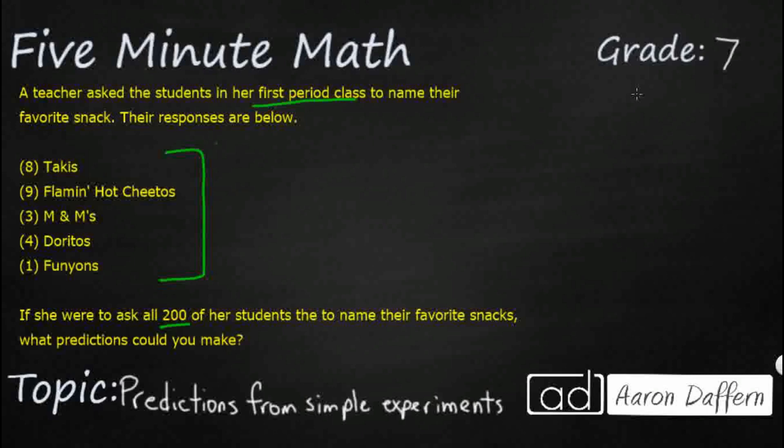So this is going to be our small sample. We're going to use this sample to make a prediction about a much larger sample that we are not going to ask all 200 for. So first we need to figure out how many students are in this sample. So let's just add up our responses here. So that's going to be 10, 17, and 8 is 25. So we've got 25 students in our first period class and she's going to make some predictions about all 200 of her students based on how these 25 students responded.